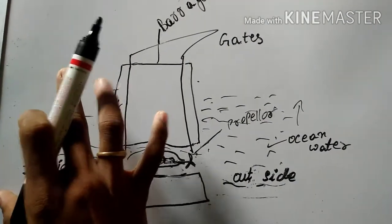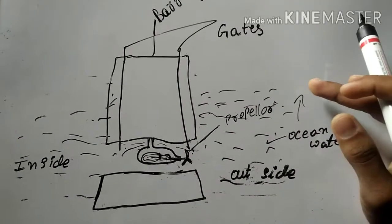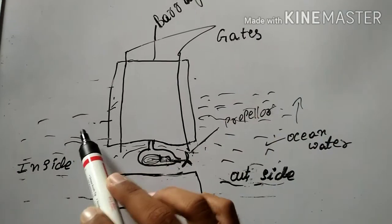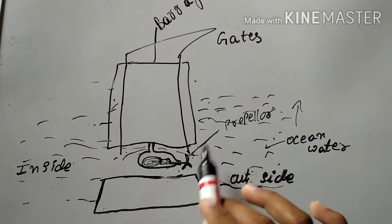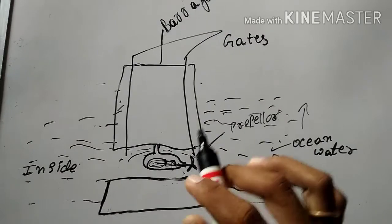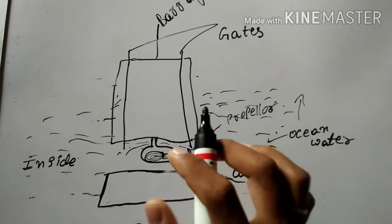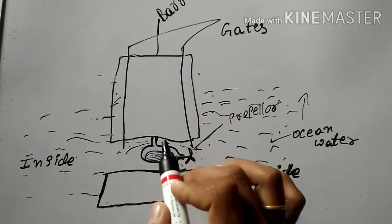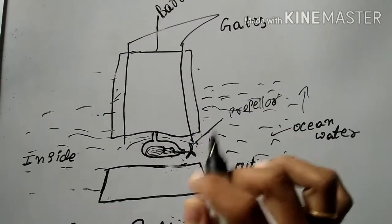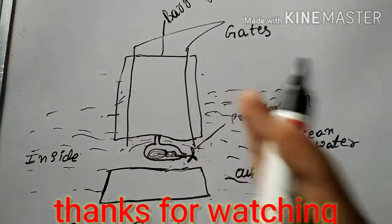The water starts flowing from inside to outside. Whenever the pressure of the water outside the barrage increases, the water on the outside starts moving towards the inside. Due to this movement, the water again touches the propeller, causing it to rotate. Whenever the propeller rotates, the shaft of the propeller rotates, the shaft of the generator also rotates, and electrical energy is produced. This is how electricity is generated in a tidal power plant.